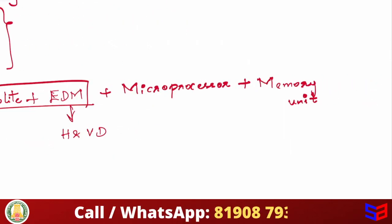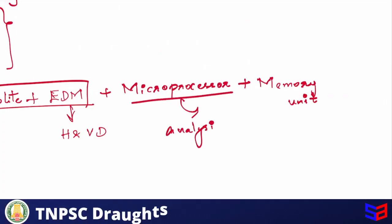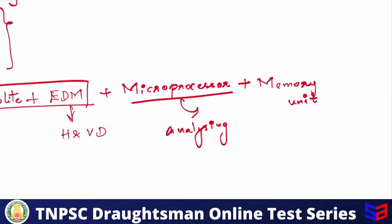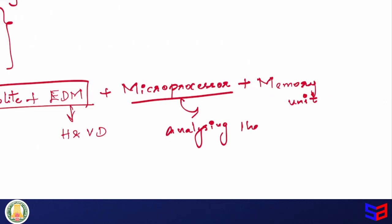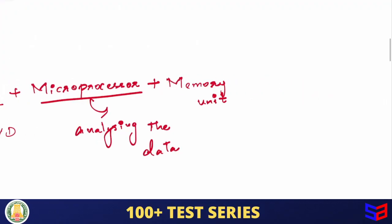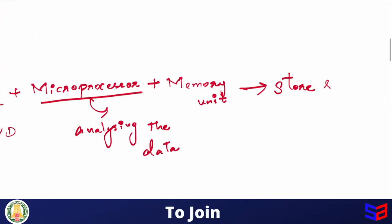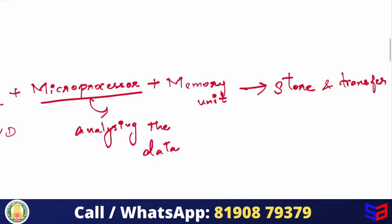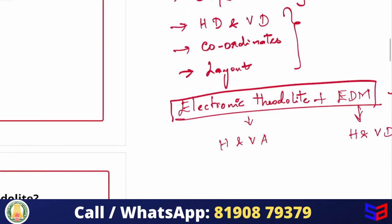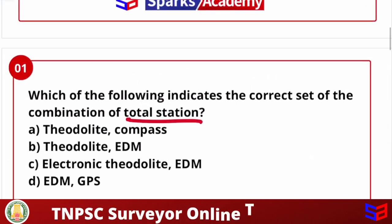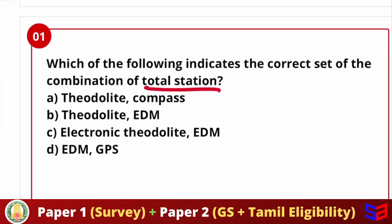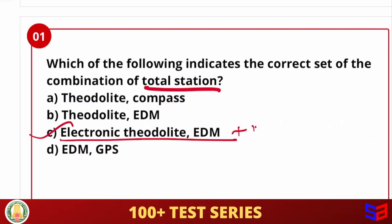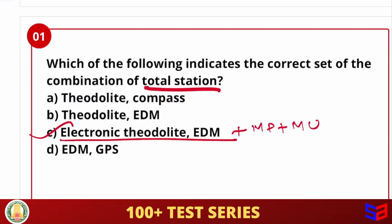If we have the major components, we can use electronic theodolite plus EDM. If those options are available, you can easily go for that. The microprocessor is for analyzing the data, and the memory unit is for storing and transferring data.